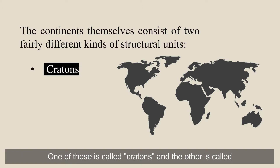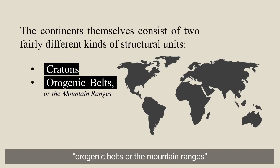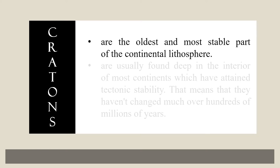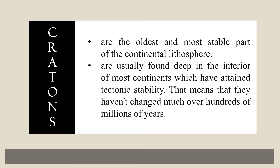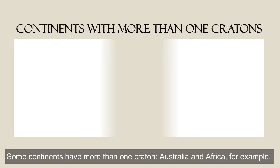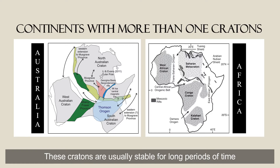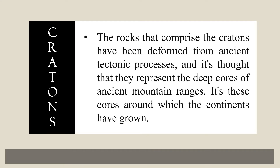One of these is called cratons and the other is called orogenic belts or mountain ranges. Cratons are the oldest and most stable part of the continental lithosphere. These parts are usually found deep in the interior of most continents, which have attained tectonic stability — meaning they haven't changed much over hundreds of millions of years. Some continents have more than one craton, like Australia and Africa, as if two separate continents have been welded together. The rocks that comprise the cratons have been deformed from ancient tectonic processes, and they are thought to represent the deep cores of ancient mountain ranges — the cores around which the continents have grown.